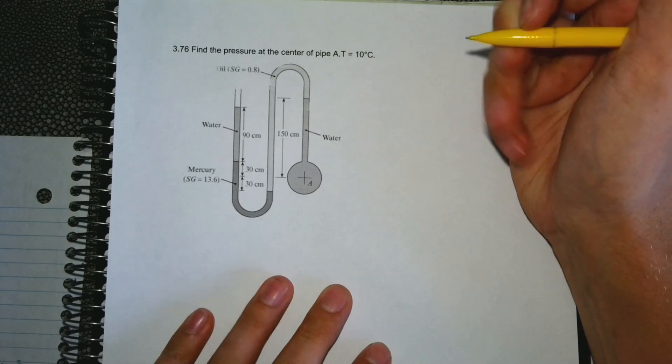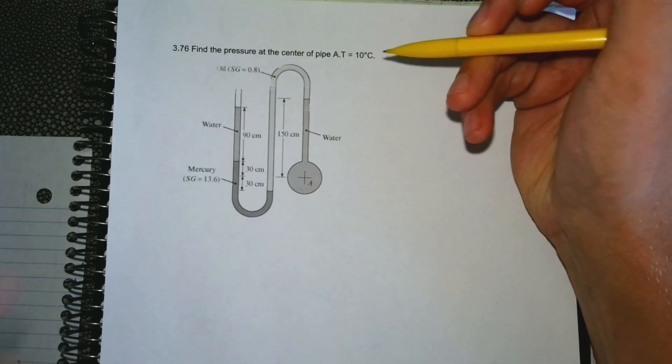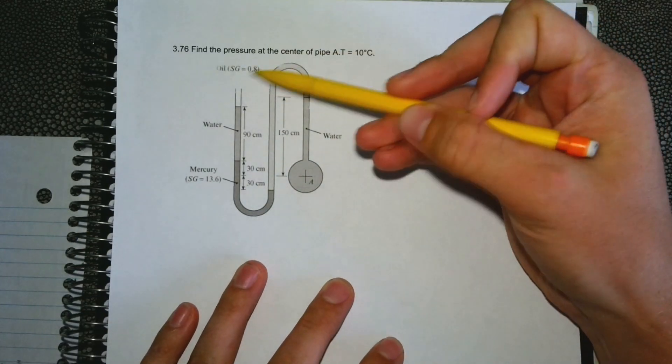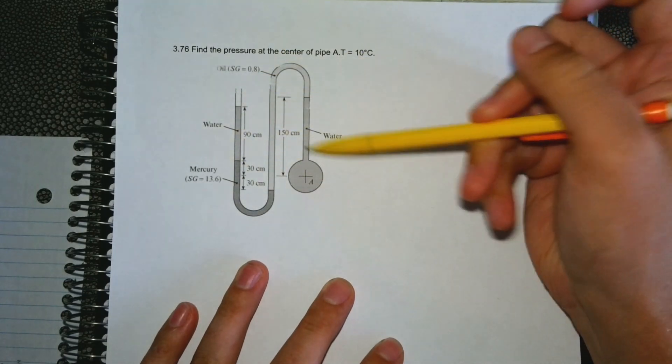Usually our first step is always write the goal, but the question is so short I'm not going to write it down. Also not going to write the givens because everything is already written down. All our givens, 10 degrees is the temperature and then it just writes everything on the diagram.